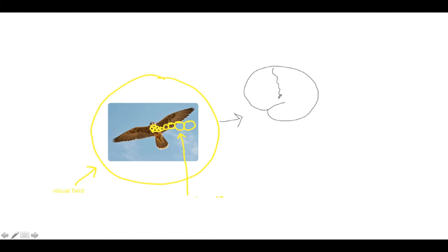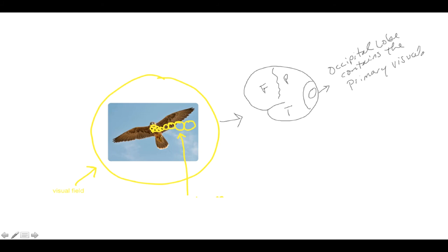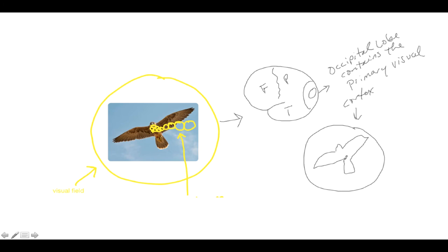Here's an example of a brain: frontal lobe, parietal lobe, occipital lobe, temporal lobe. The occipital lobe contains the primary visual cortex. If we look at that primary visual cortex, we would see that same image on the cortex. And that is an example of the retinotopic map.